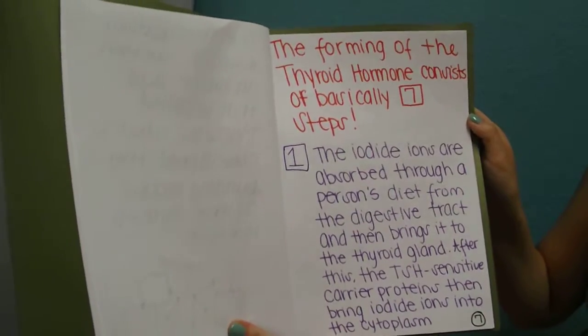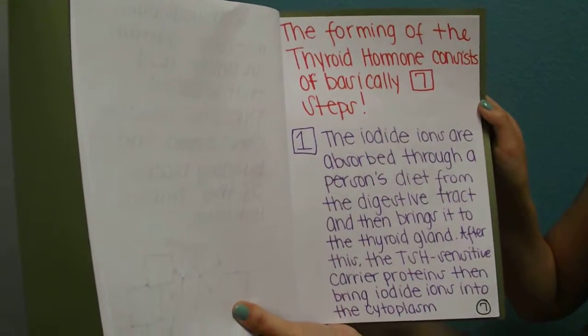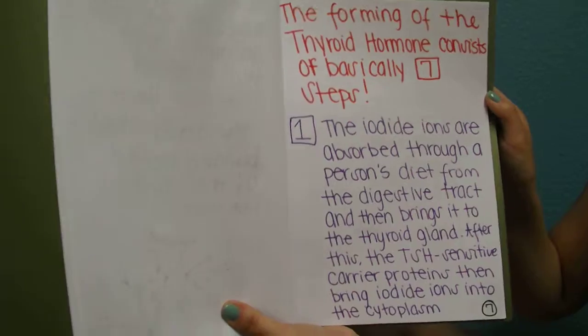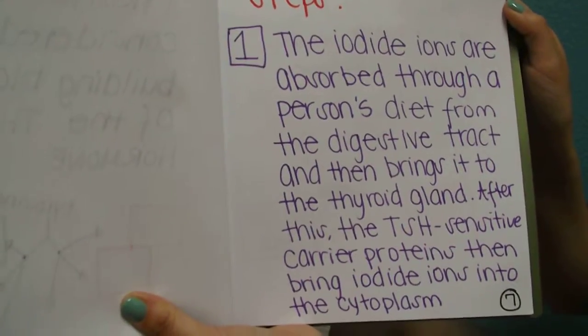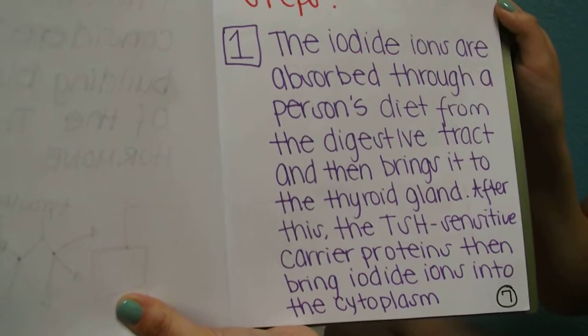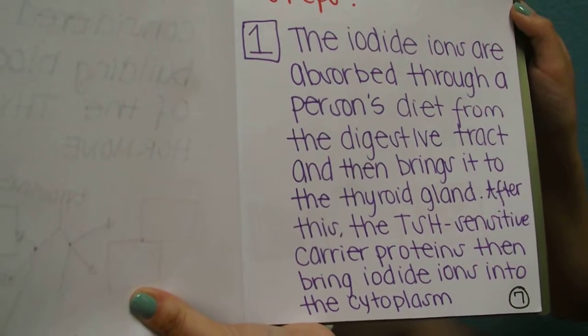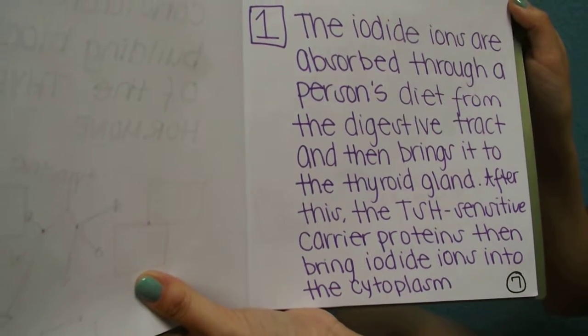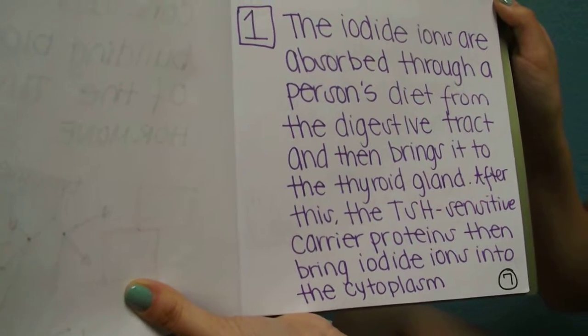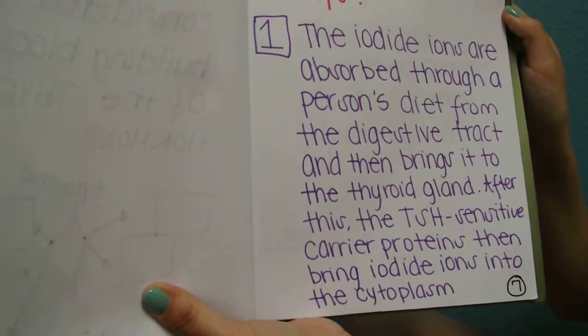The forming of the thyroid hormone consists basically of seven steps. The first step is the iodine ions are absorbed through a person's diet from the digestive tract and then brings it to the thyroid gland. After this happens, the TSH-sensitive carrier proteins then bring iodine ions into the cytoplasm.